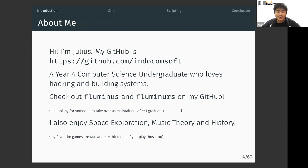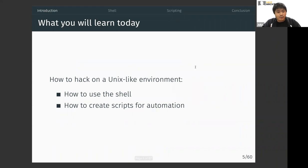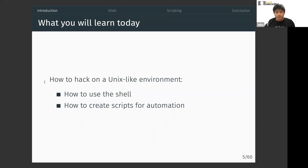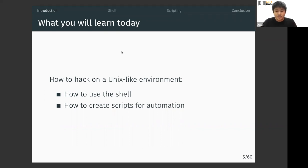I'm Julius — you can check out my GitHub at the link. I'm a year four Computer Science undergrad. I did build some stuff, like Fluminous, which is a tool that can help you download things from Luminous. For today, we're going to go through how to hack on a Unix-like environment: first how to use the shell, then how to create a script for automation, so you don't have to keep running the same thing over and over again.